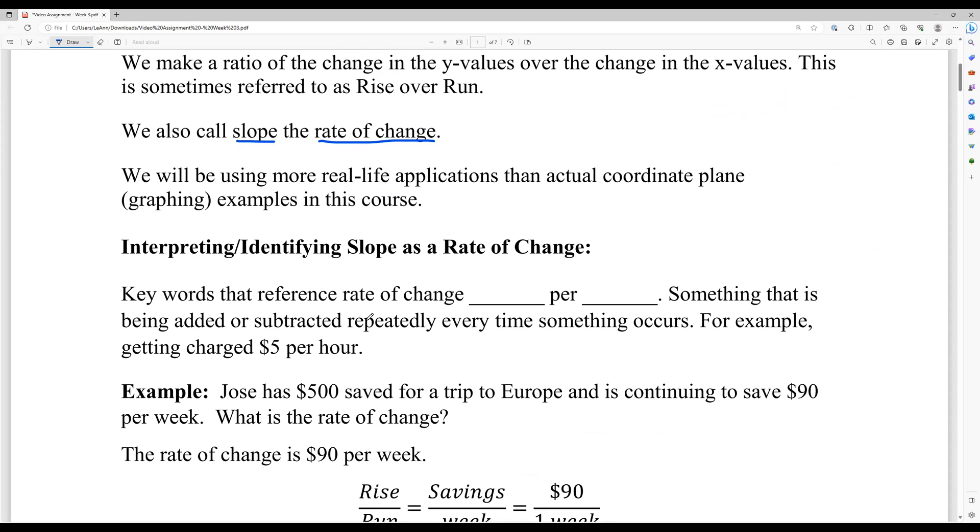Keywords that will reference a rate of change is something per something, like dollars per hour, miles per minute. Something that has been added or subtracted repeatedly every time something else occurs. So if you say I earn $15 per hour or $5 per hour is what I get charged, if you had someone at your house and they're working for you and you're charging them $5 per hour, then every hour they work it'd be like five plus five plus five plus five. So it's repeated addition.